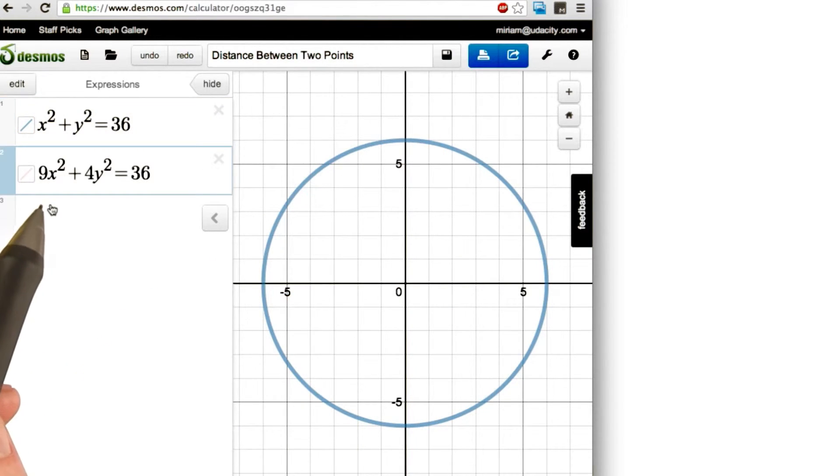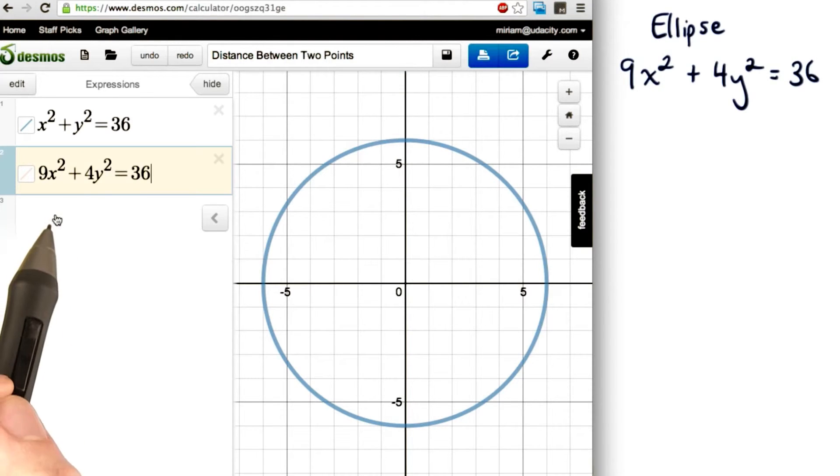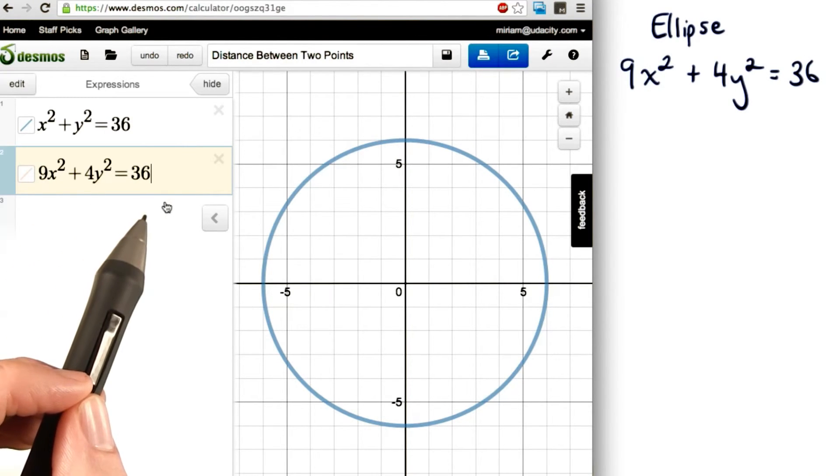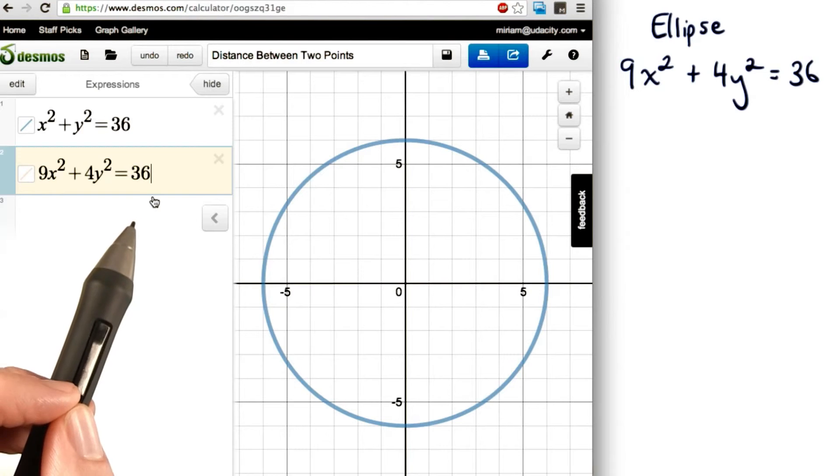But what if we wanted to graph this equation? Notice that we have different amounts of x squared and y squared now. I'm going to go ahead and let you know that this will be the graph of an ellipse. So let's see how we can graph it ourselves.